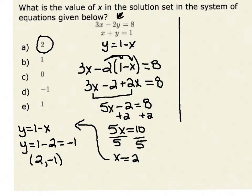One way I could do this is I could multiply my second equation on both sides by 2. This would result in the system 3x minus 2y is equal to 8, and my second equation would become 2x plus 2y is equal to 2.